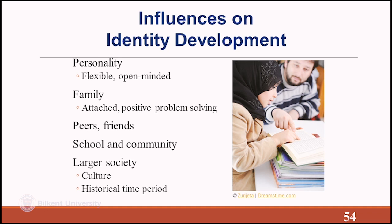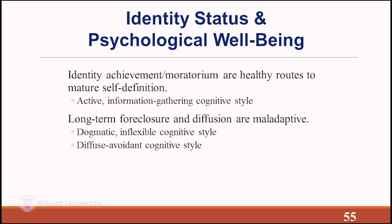School, community, the larger culture, and historical time period also influence identity development — periods of war or crisis can bring different types of commitment. Identity achievement and moratorium are healthy routes to mature self-definition; active information gathering is important. Long-term foreclosure and diffusion are maladaptive. Foreclosure is associated with a dogmatic, inflexible cognitive style; diffusion is associated with an avoidant style — not wanting to think about it, just living in the present.